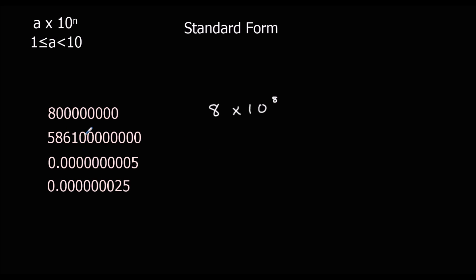Secondly, the number between 1 and 10 is 5.861. So we've got 5.861 times 10. How many times? 1, 2, 3, 4, 5, 6, 7, 8, 9, 10, 11 times. So 5.861 times 10 to the power of 11.